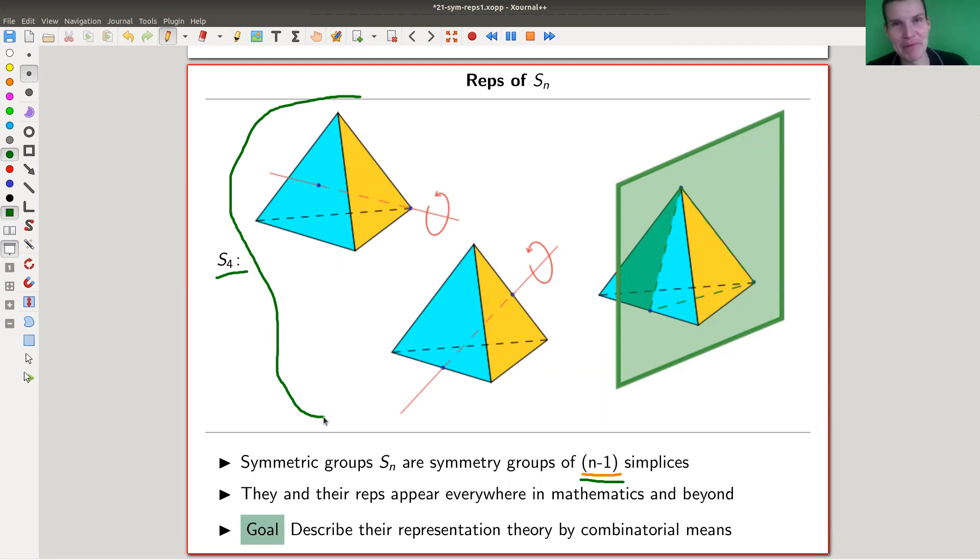Anyway, that might be wrong actually. Anyway, there is a relation, a very close relation up to some off by one errors from symmetric groups to simplices and their permutation groups. So basically they permute the vertices, the vertices of those simplices. And yeah, it's a permutation group.